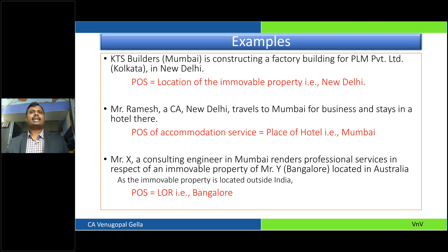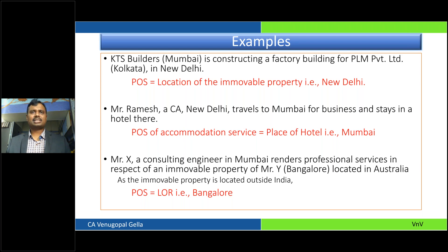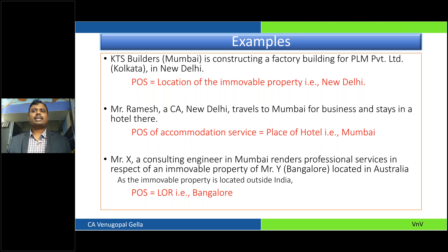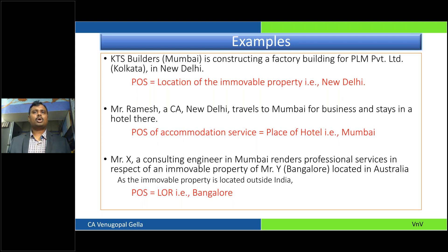Here are some examples. KTS Builders Mumbai is constructing a factory for PLM Private Limited in Kolkata, but the factory is being constructed in Delhi — so the place of supply will be Delhi. A chartered accountant in New Delhi travels to Bombay for business and stays in a hotel — place of supply would be Maharashtra, Mumbai. A consulting engineer in Mumbai is rendering professional services with regards to a property coming up in Australia — the person who has contracted is from Bangalore, Karnataka — so the place of supply here is location of the recipient, which is Karnataka.